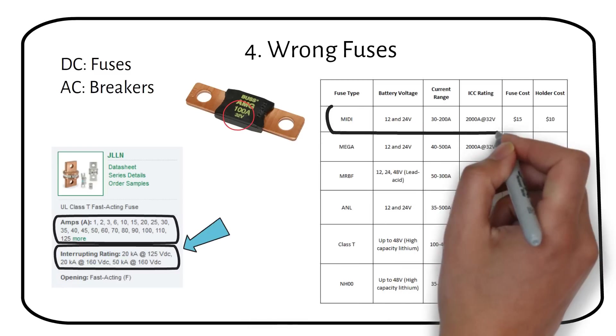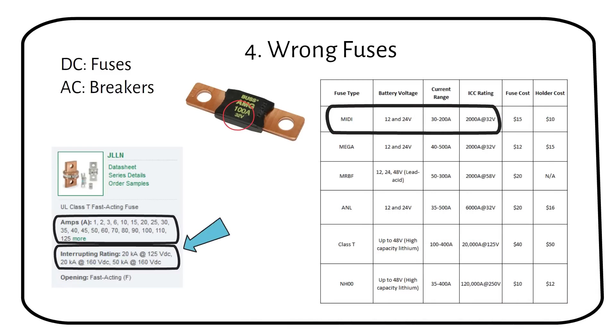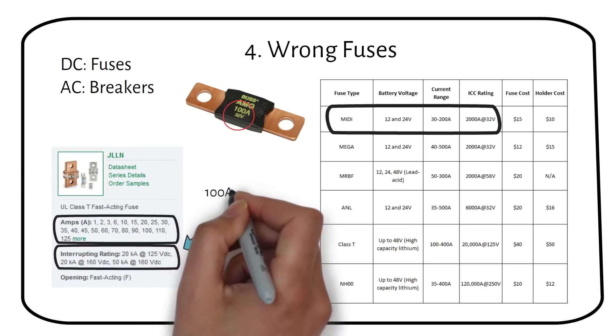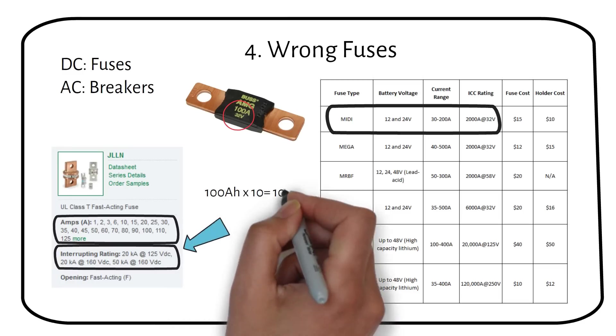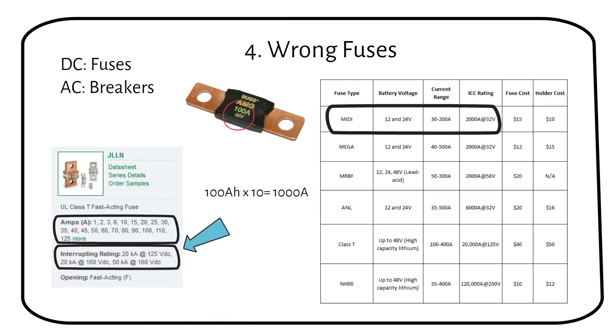If we have a midi fuse, it is suitable for 12 volts and 24 volt systems and can handle an interrupting current of 2000 amps at 32 volts.